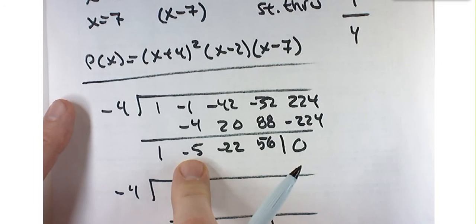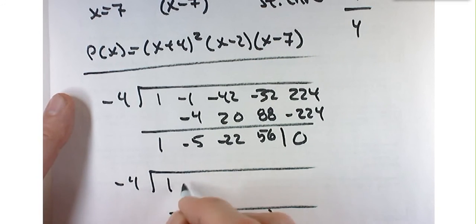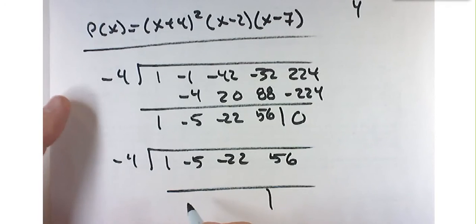So great. Now I know that negative 4 is a root twice, so I'll do negative 4 again.